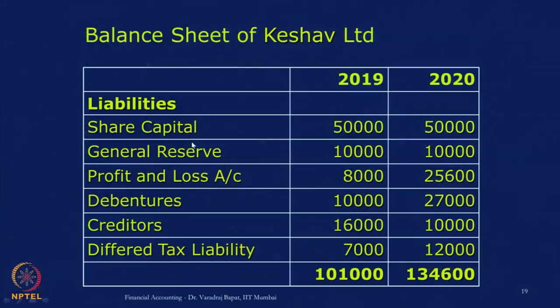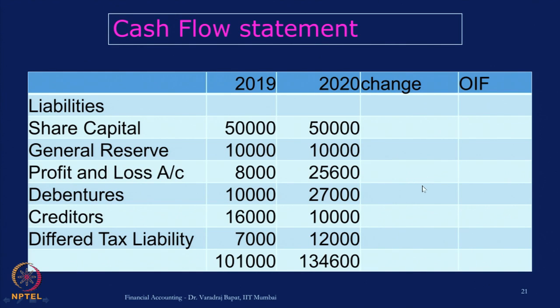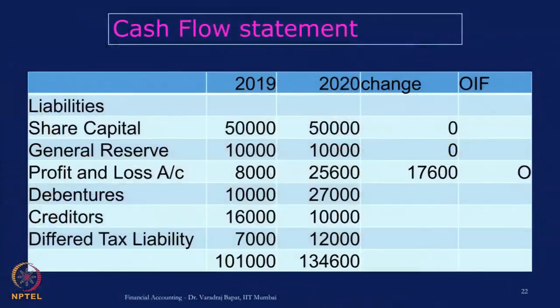Let us start with share capital — there is no movement. General reserve — again no movement. For profit and loss account, we see an increase from 8,000 to 25,600. This change is most likely to have some impact on cash flow. Make 5 columns: item, two years' figures, change, and O/I/F. The change in profit and loss account is due to profit accumulated during the year and is mainly an operating item, so we mark it as O. This is our working note — the exact amount will be determined in the cash flow statement.